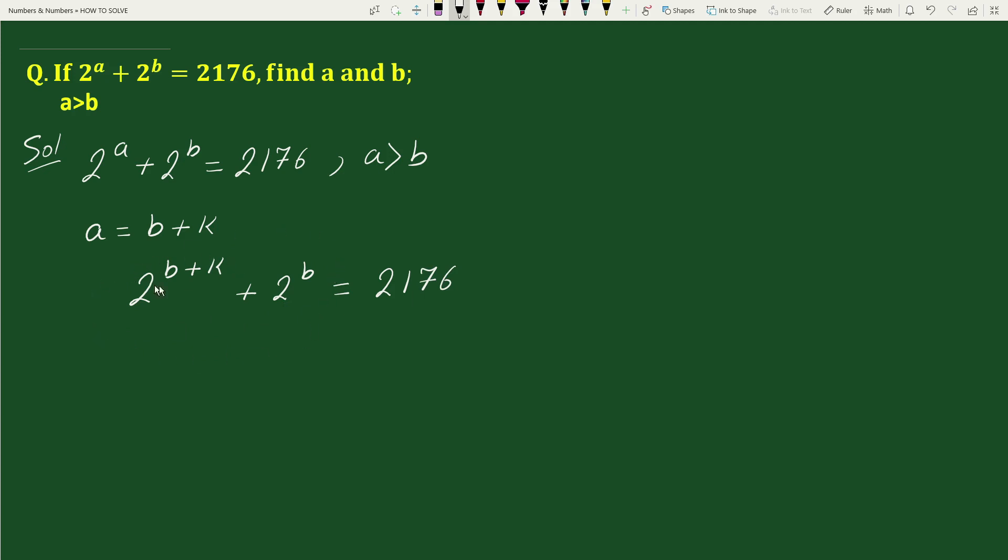we can write this as 2 to the power b times 2 to the power k plus 1 equals to... Now 2176 can be written as product of prime factors in exponential form as 2 to the power 7 times 17.